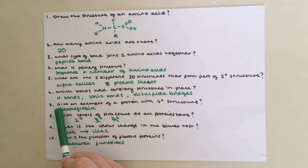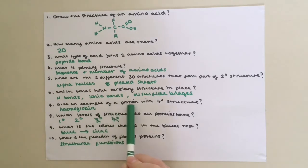Question seven: Give an example of a protein with quaternary structure. A good example is haemoglobin. Question eight: Which levels of structure do all proteins have? Primary and secondary. Not all proteins will have tertiary or quaternary structure.